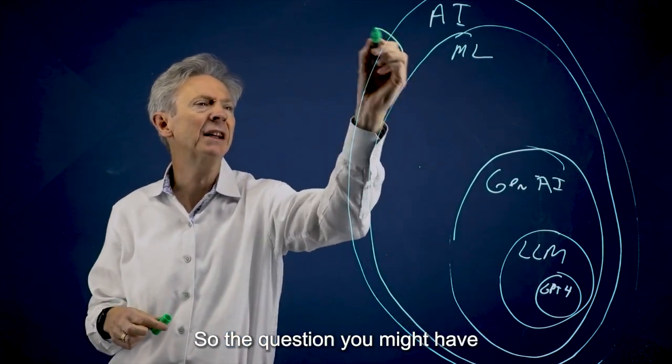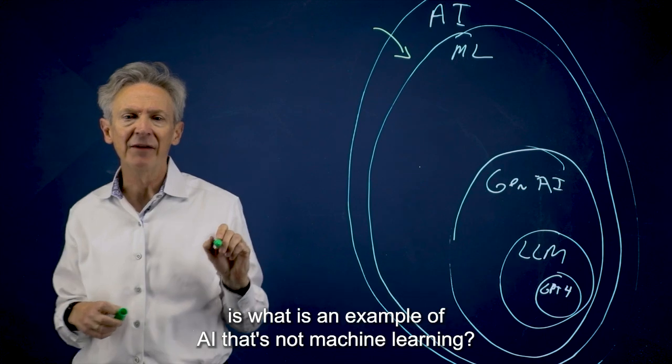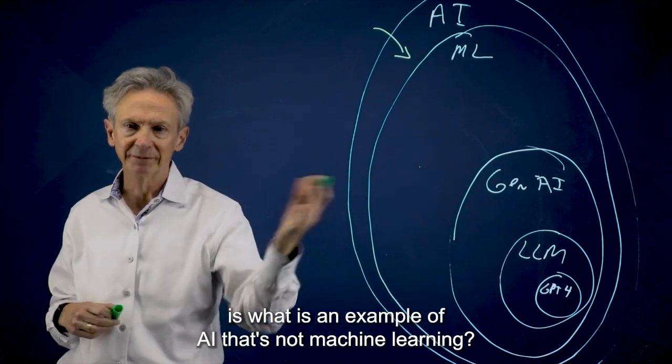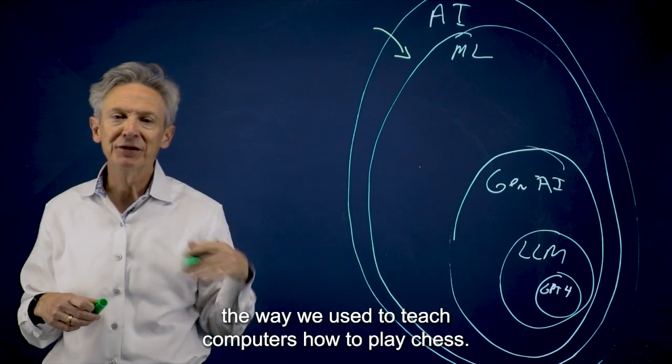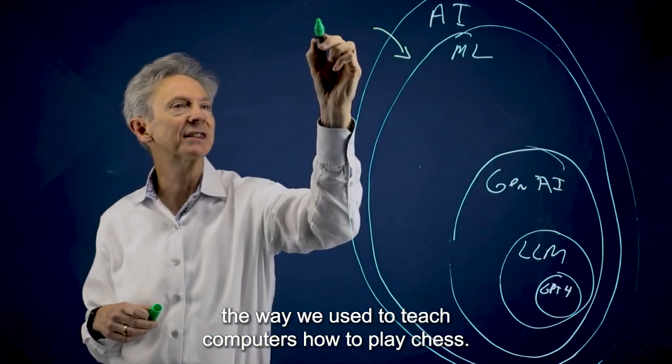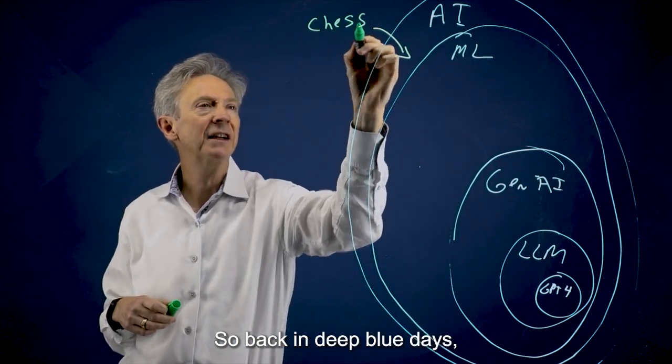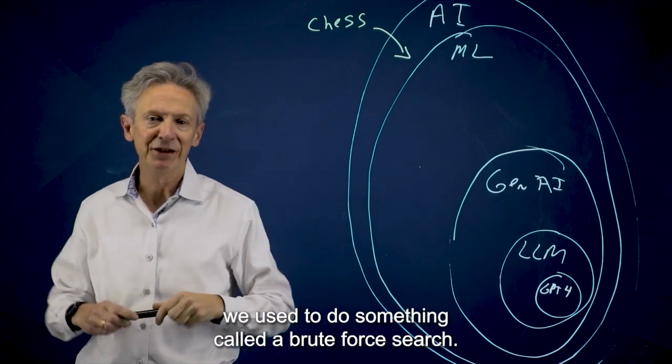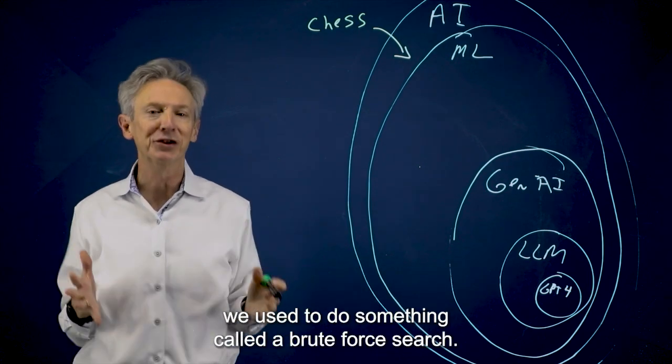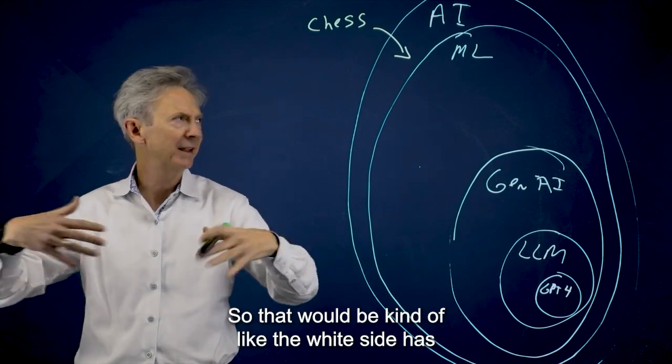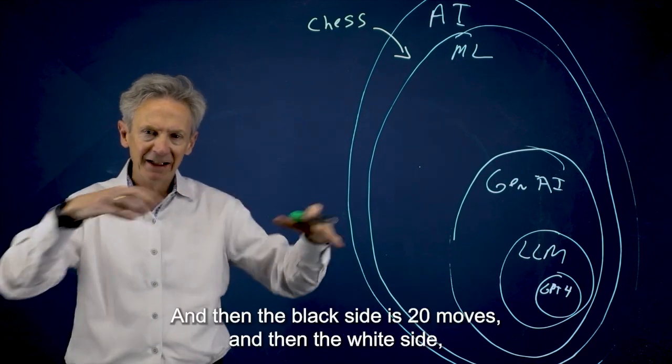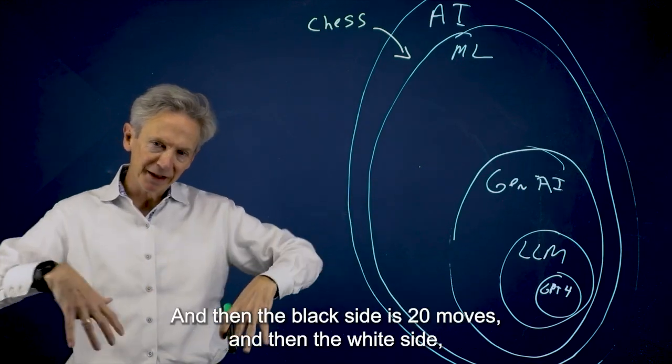So the question you might have is what is an example of AI that's not machine learning? And an example would be the way we used to teach computers how to play chess. So back in Deep Blue days, we used to do something called a brute force search. That would be kind of like the white side has 20 moves, and then the black side has 20 moves.